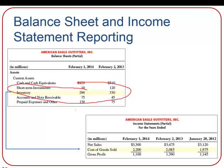We want to match our expenses with the same revenue when it's incurred. So when we sell something and make revenue, we will only then expense the cost of the inventory into the account called cost of goods sold, which shows up on our income statement.